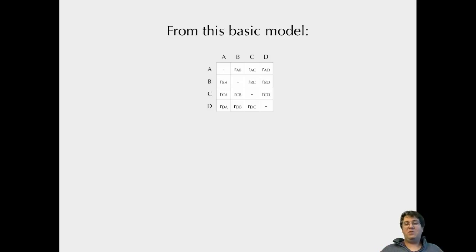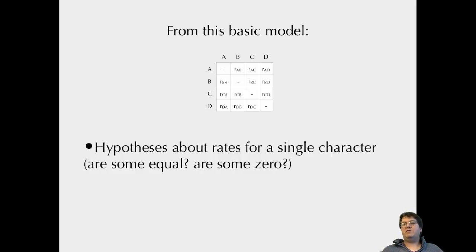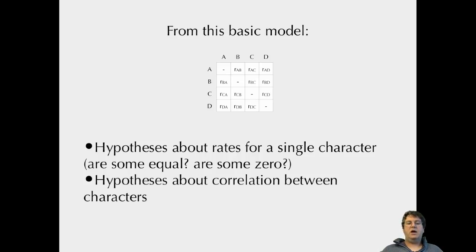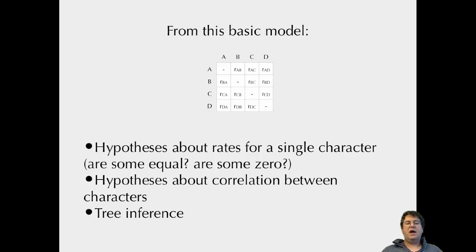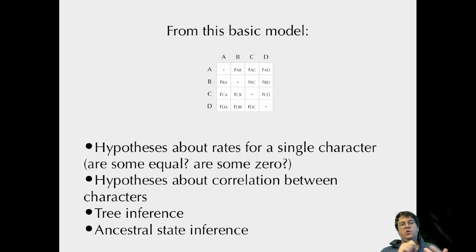The big point is: from the basic model of discrete traits changing over continuous time in a Markovian way — where where I go next depends only on where I am — we get a whole variety of approaches. Hypothesis testing about rates for a single character: are some rates equal, set to zero, or larger than others? Correlation between characters: do transition rates depend on the state of another character? Inferring a tree: which tree topology maximizes the likelihood of the observed data? Or ancestral state inference: what state at an internal node maximizes the likelihood of the data given the model? It's remarkable that all these different questions come down to the same basic model.